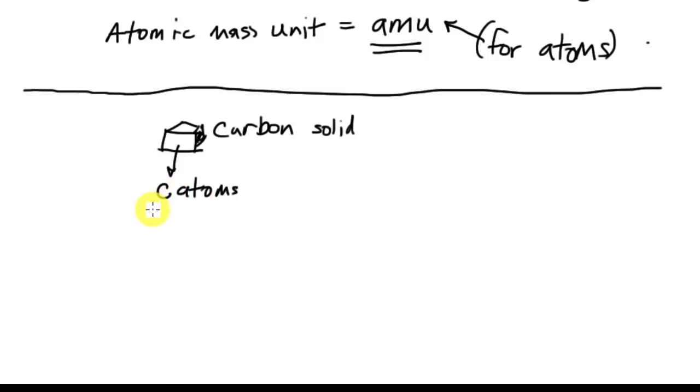But the problem is that we know that there are different isotopes of carbon. There's not just one type of carbon. There's various isotopes. So if I'm talking about this sample of carbon, what I want to know is what is the mass of an individual carbon atom? What's that mass going to be?